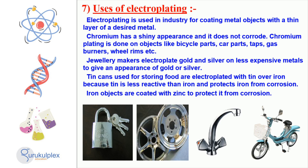Lastly, iron objects are electroplated with zinc for rust proofing and protecting against corrosion. The various applications of electroplating demonstrate its importance in industry and manufacturing. I thank you for your attention.